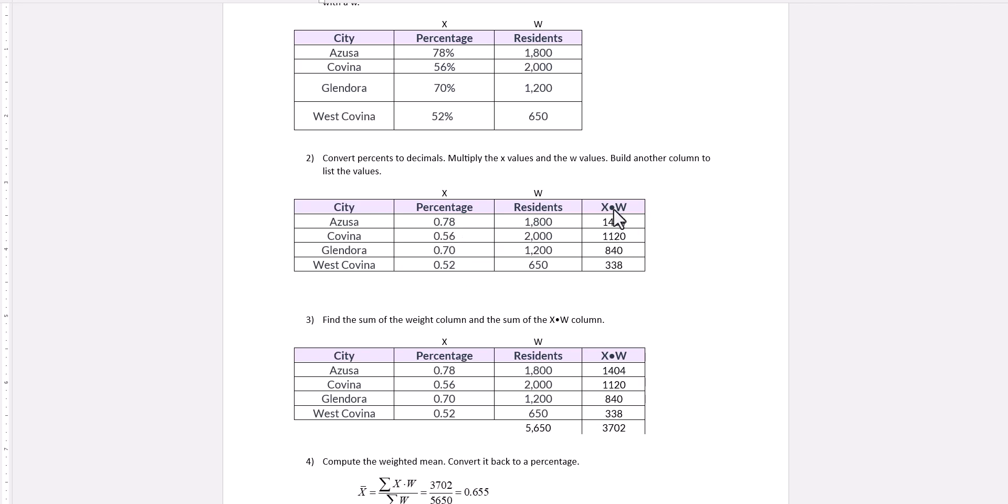We build another column for the X times W values. So we multiply each X value with each W value. So 0.78 times 1,800 is 1,404. 0.56 times 2,000 is 1,120. And then just repeat those products.